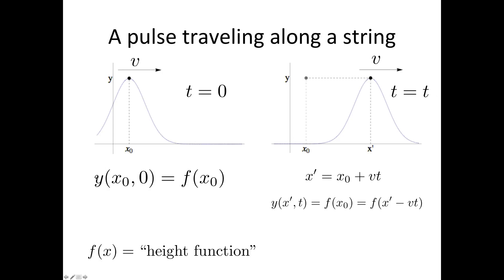So what we're going to do is rewrite this equation now, except now we're considering this point here. So we've got y, x is now x prime, and the time has gone on from t equals zero to t equals t. But the pulse is exactly the same pulse. It's described by the height function.